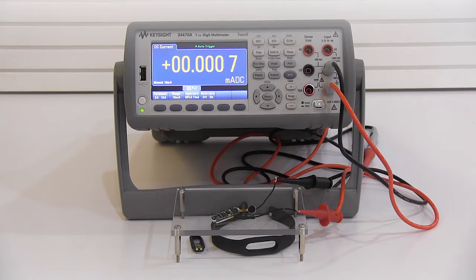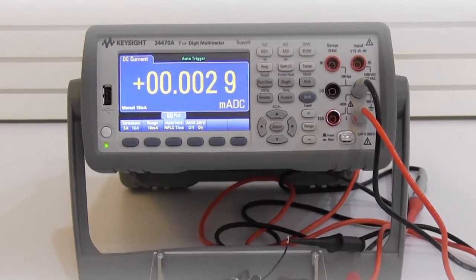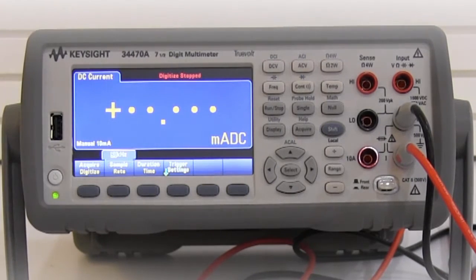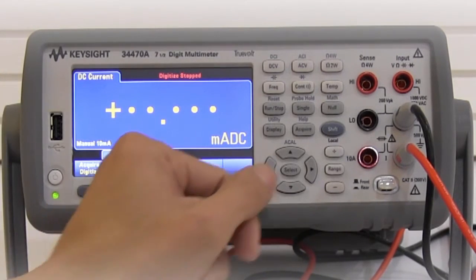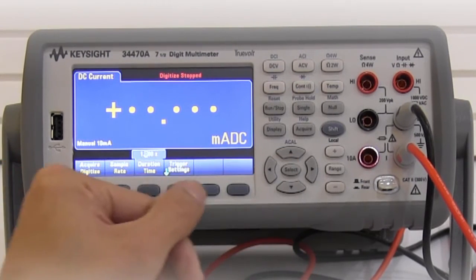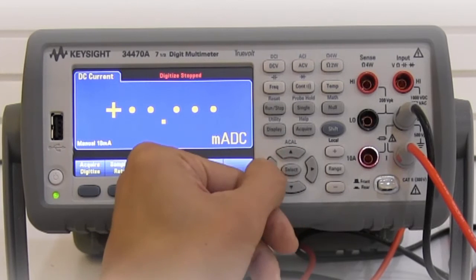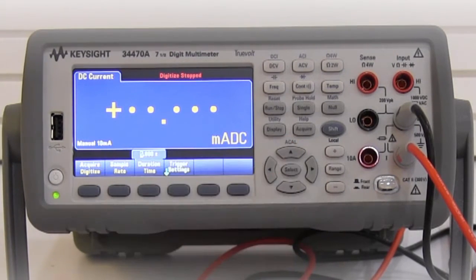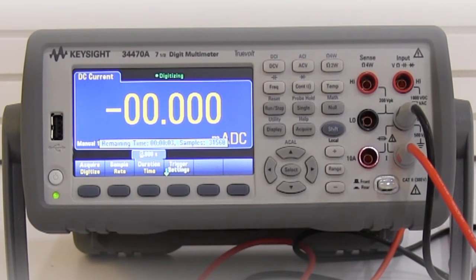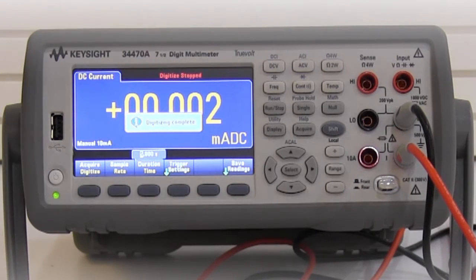Let's say if you're interested in seeing the finer details on how much current is drawn by this fitband, you can actually do this by using the digitizing mode. So in this case, I'm setting the sampling rate to 10,000 readings per second for a duration of 5 seconds. Once this is done, I'll hit the start button and the digitizing is completed.